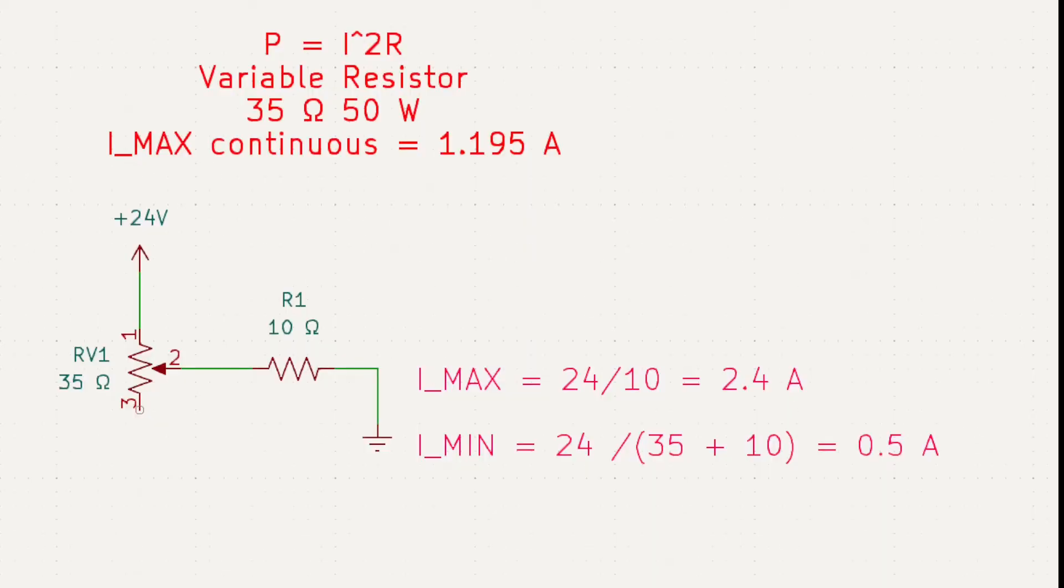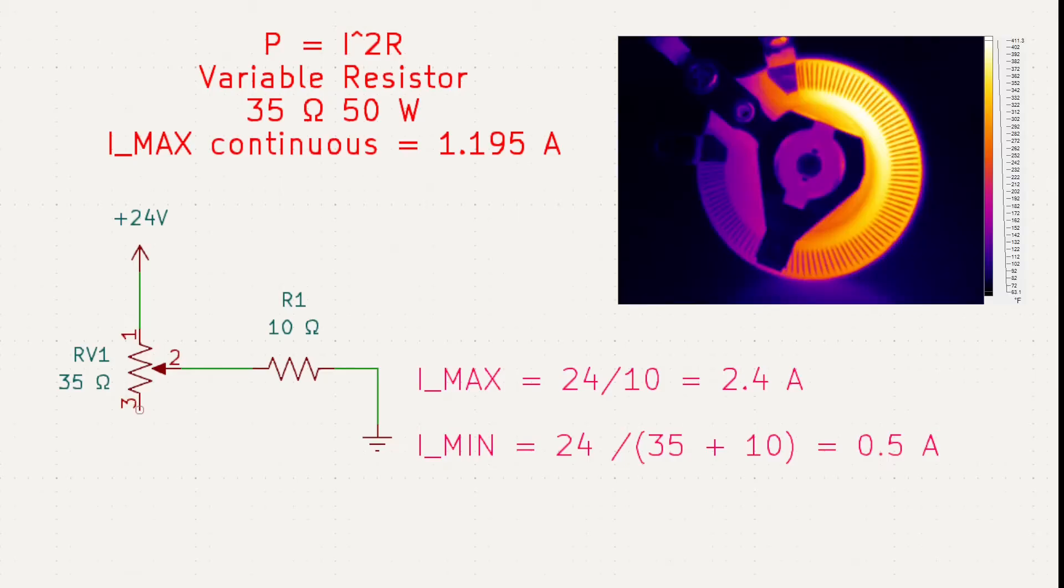But that's not what we're dealing with in this circuit. Instead, we have a variable current, which can vary from 0.5 amps to 2.4 amps. Things are fine when we have the entire resistor in the circuit, because we have a lower current, and we have all of the resistor body to dissipate that power.